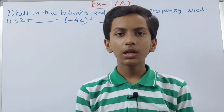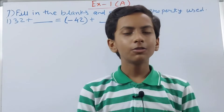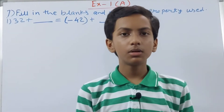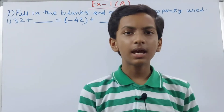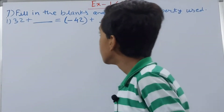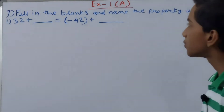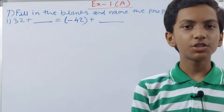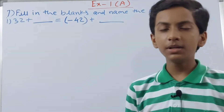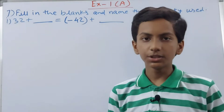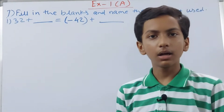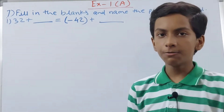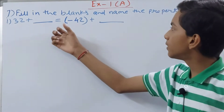Hello friends, welcome back to my YouTube channel 'Shine, Unlock Your Learning.' In this video we're going to solve ICSE Maths Class 7, Chapter 1: Integers, Exercise 1A, Question Number 7 — fill in the blanks and name the property used. We have many properties for integers, like commutative property, associative property, identity property, and more. We have to find which property fits each blank.